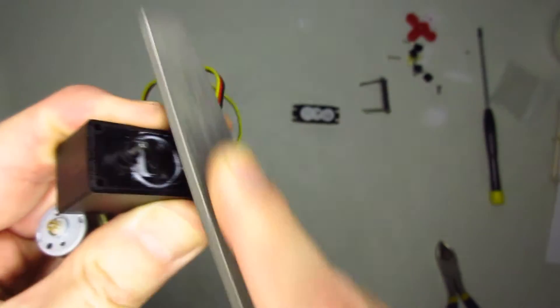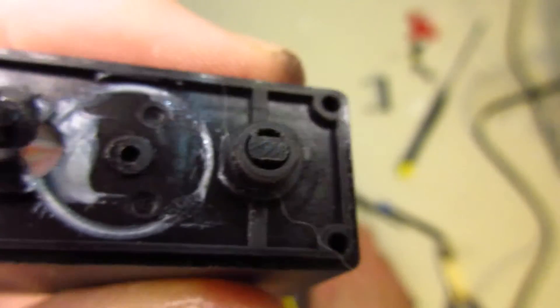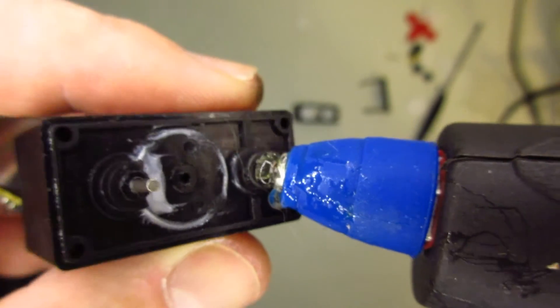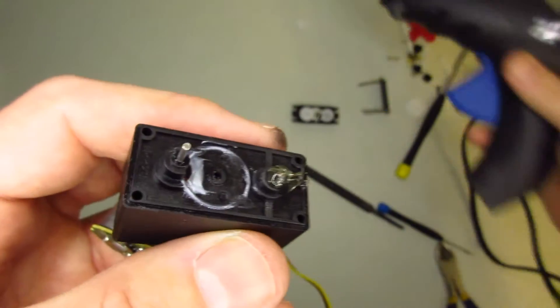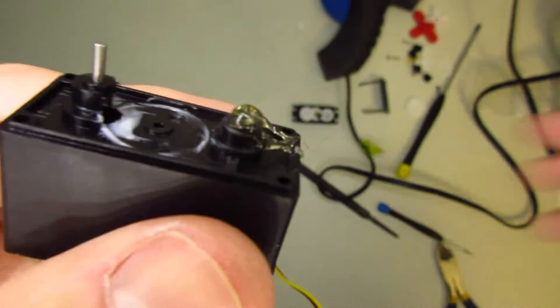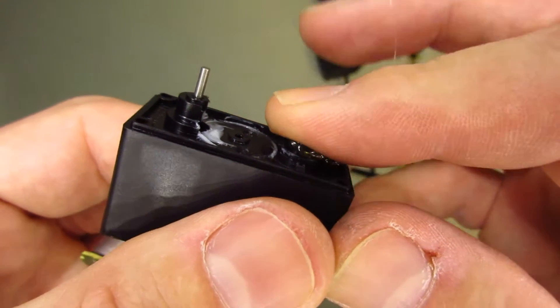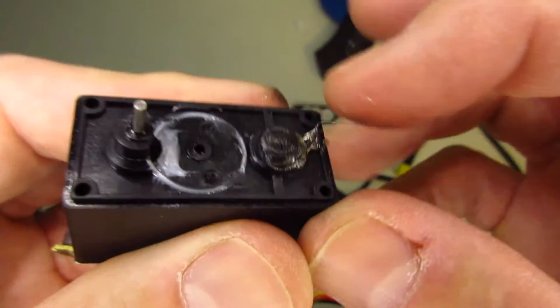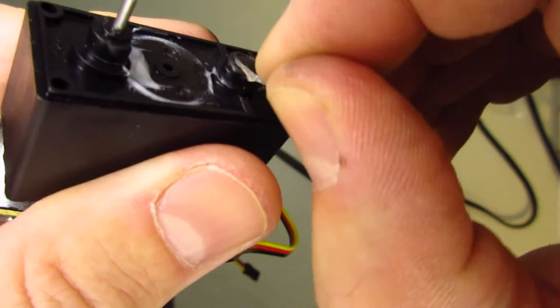And once it's filed down and flush, we're going to hit it with some glue just to keep it from moving around so neutral will always be neutral. I'm just going to push it in there and then clean up the glue around, because the output gear still sits on top of this. This has to be fairly clean.